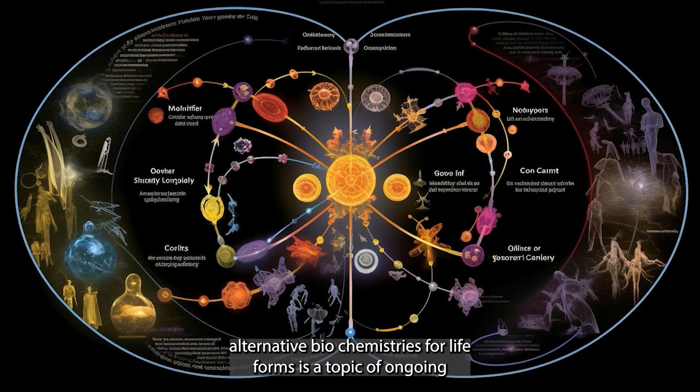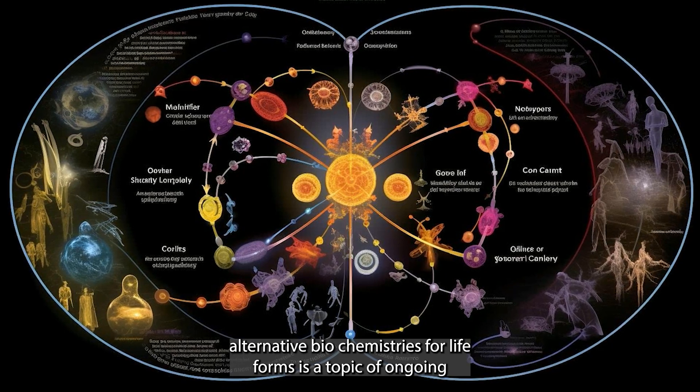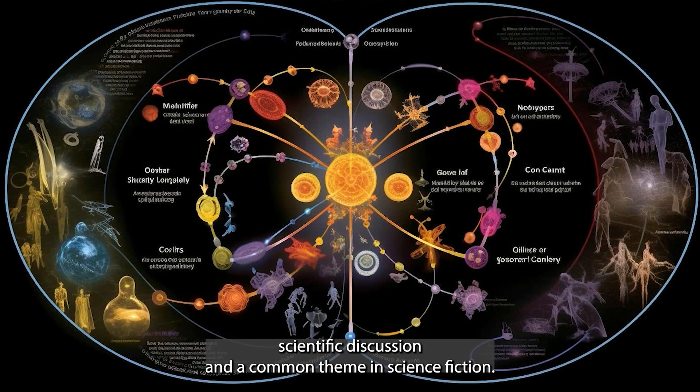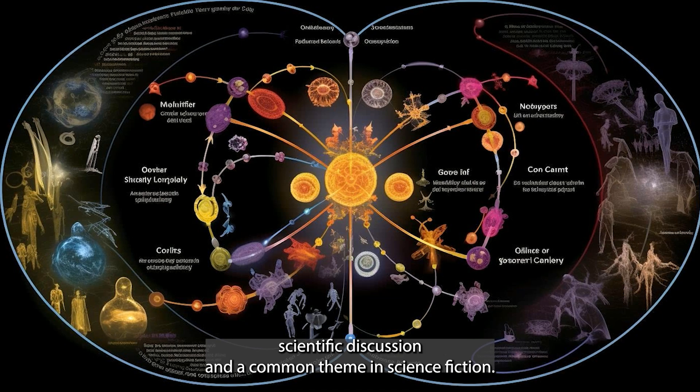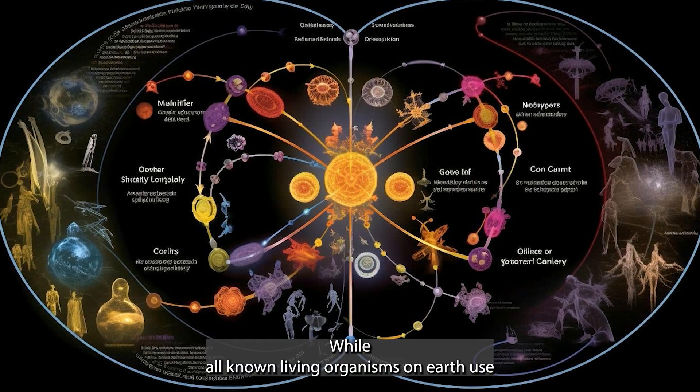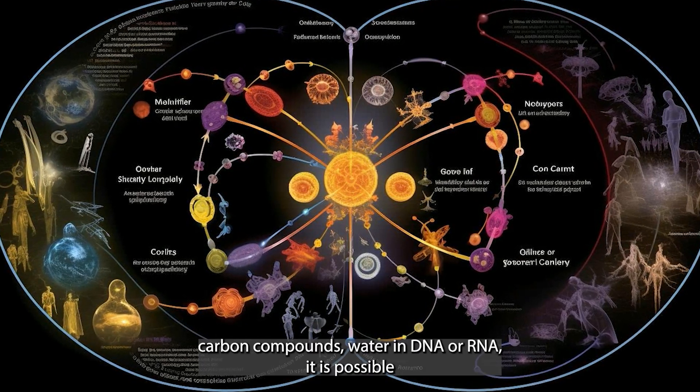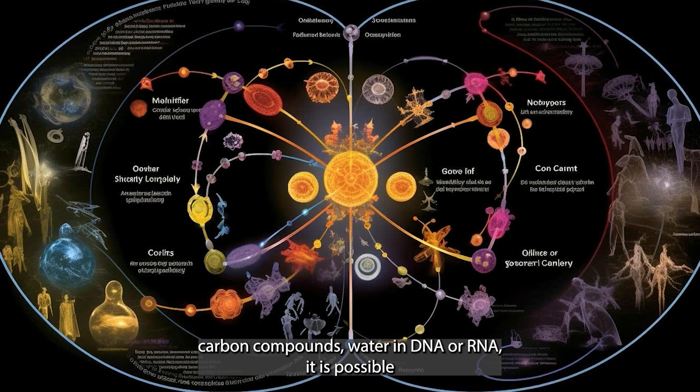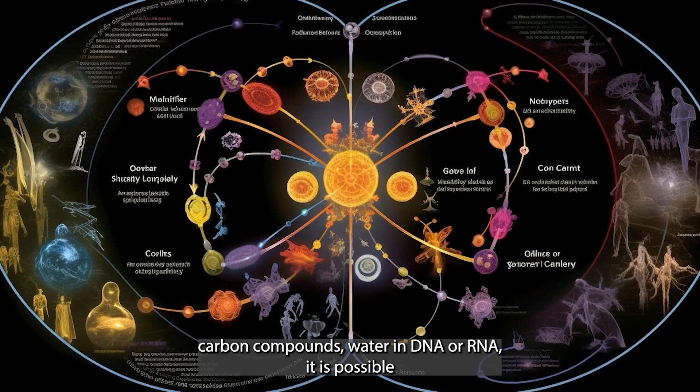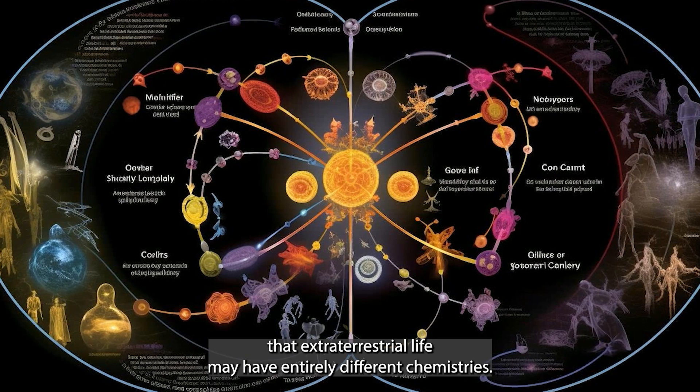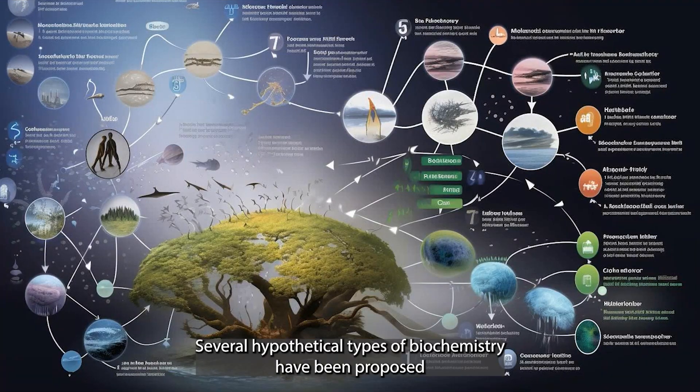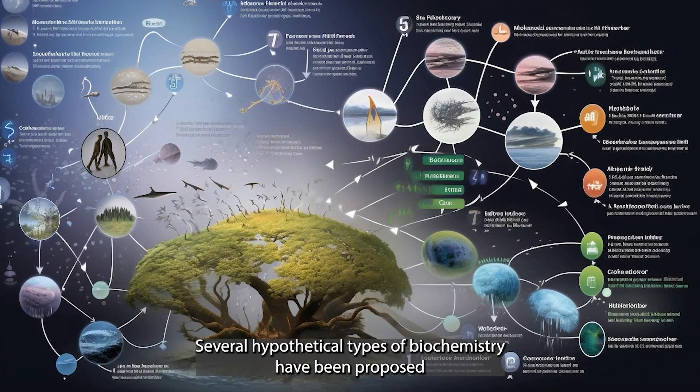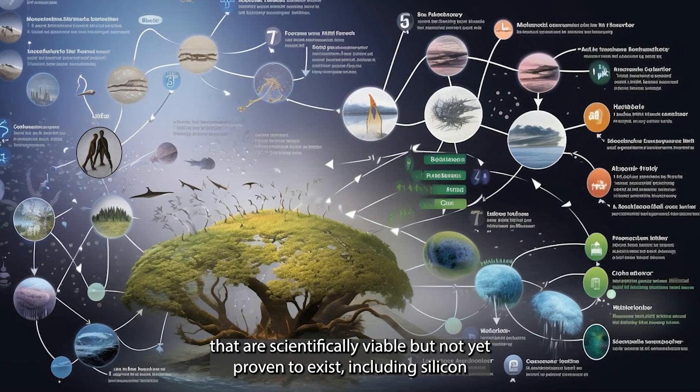The possibility of alternative biochemistries for life forms is a topic of ongoing scientific discussion and a common theme in science fiction. While all known living organisms on Earth use carbon compounds, water, and DNA or RNA, it is possible that extraterrestrial life may have entirely different chemistries.